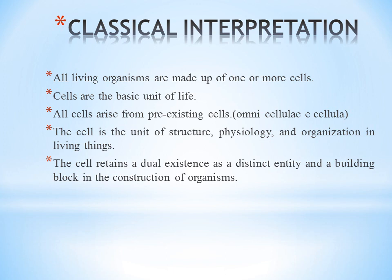The classical interpretation states that all living organisms are made up of one or more cells. The cell is the basic unit of life, it arises from a pre-existing cell, and the cell is the unit of structure, physiological organization, and living organisms.